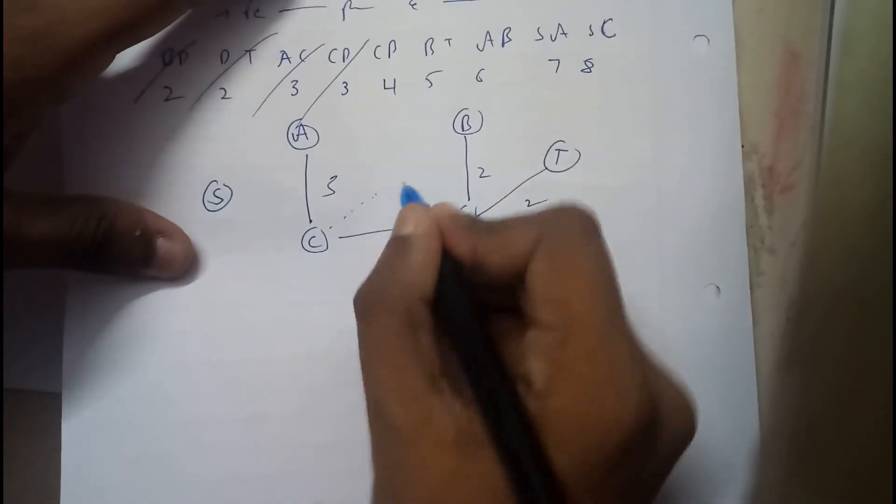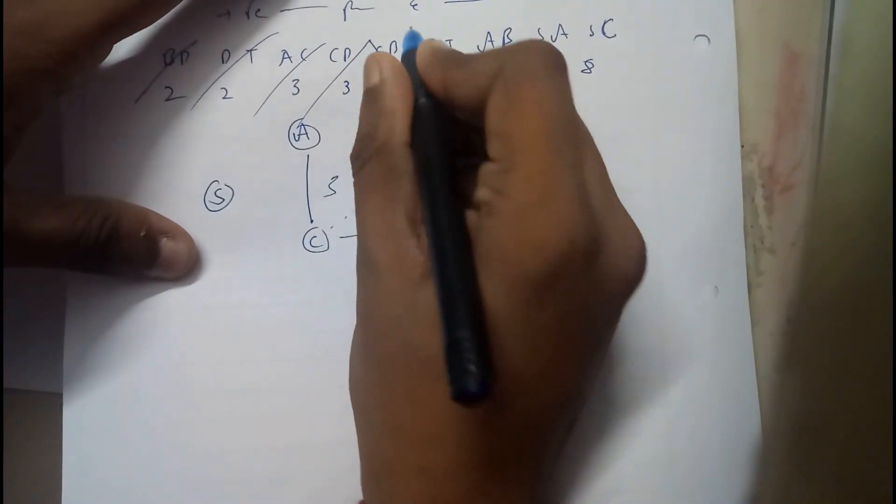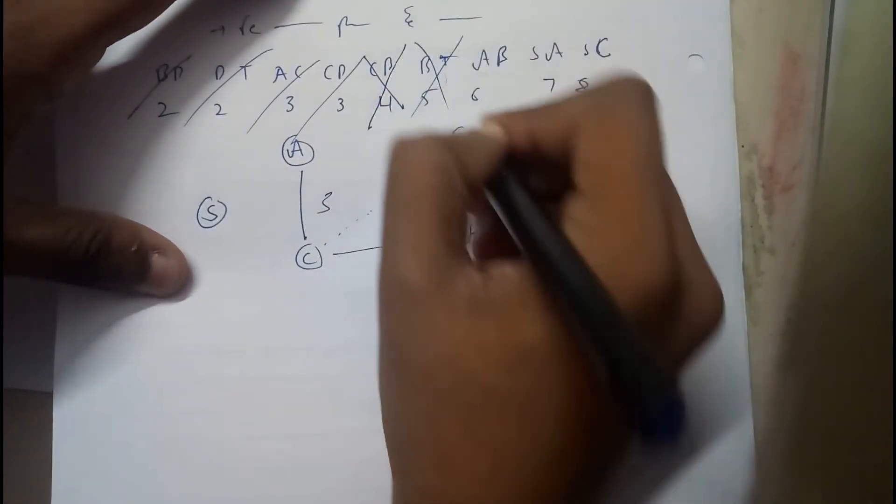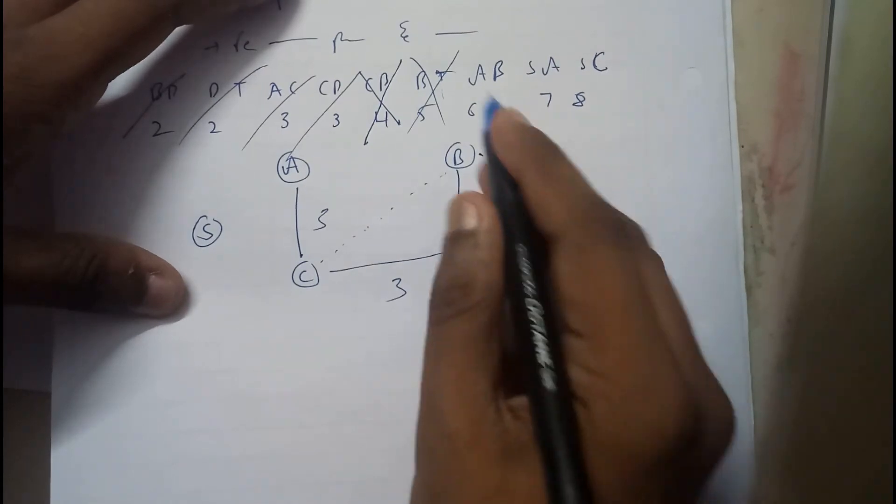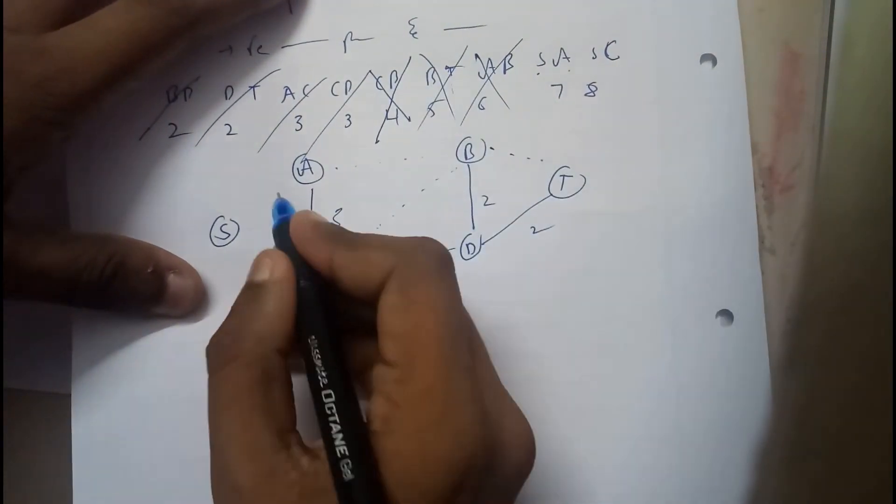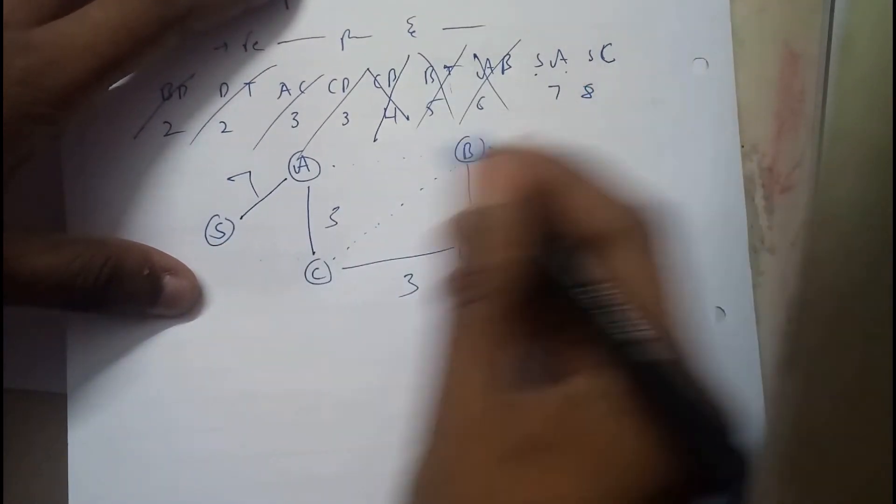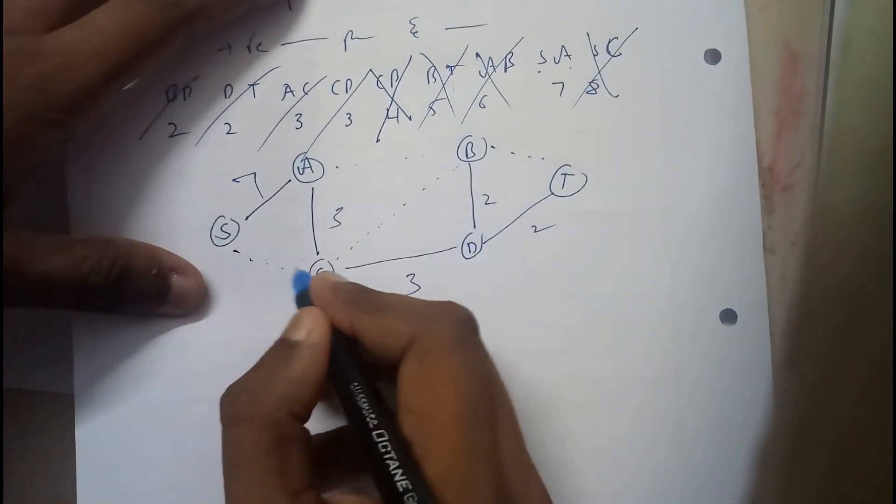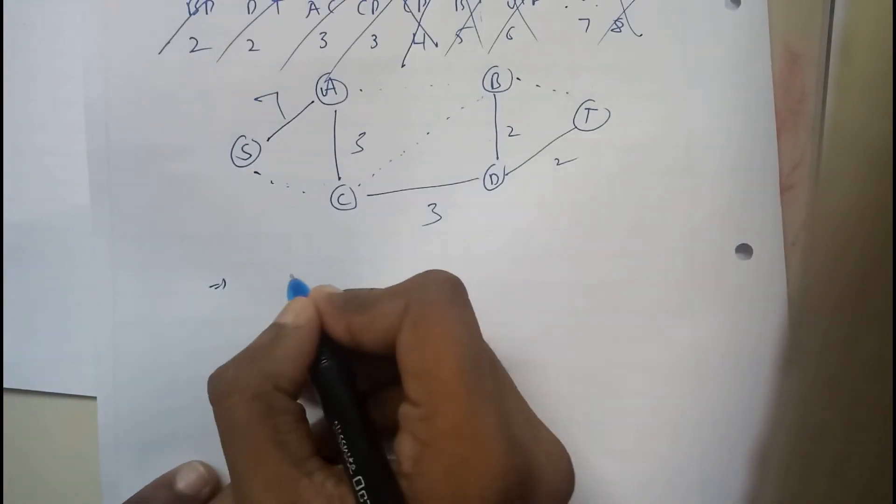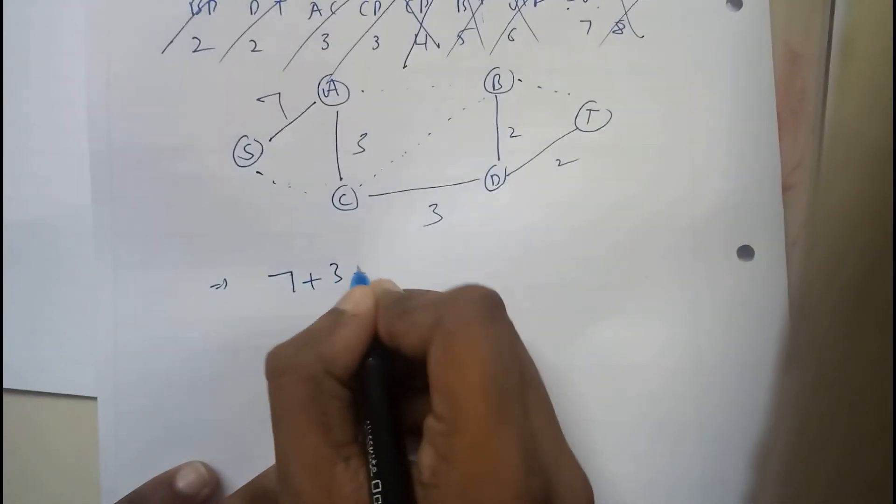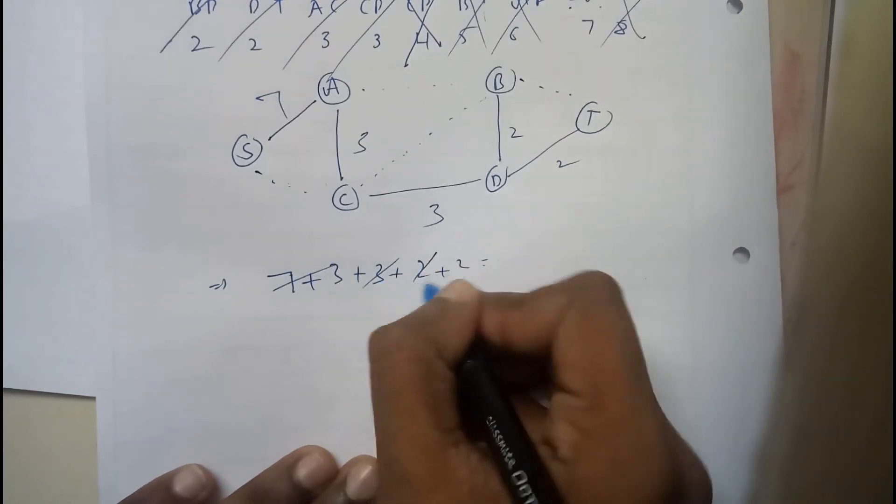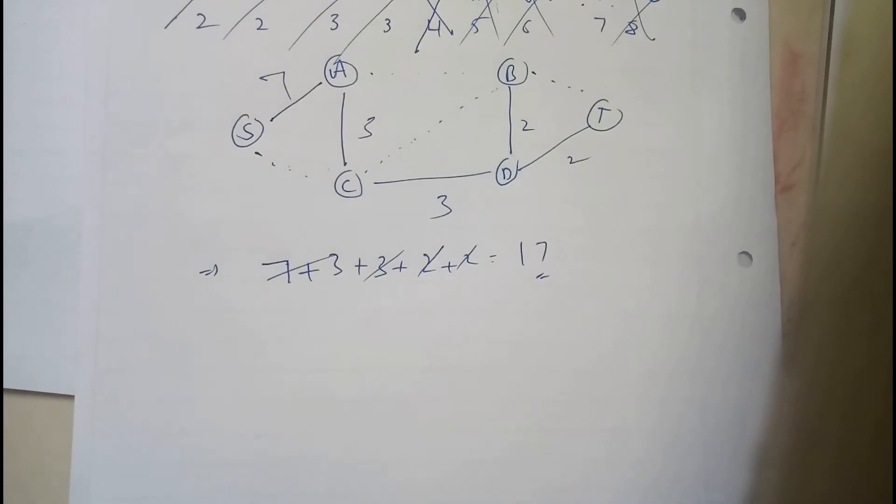CD, when I'll be trying to draw CD, it's going to be a closed loop, so I'll be avoiding it. BT, same situation. AB, same situation. SA, this is possible. SC, same situation. So this could be the minimum cost spanning tree for that. 7 plus 3 plus 3 plus 2 plus 2. 10, 30, 15, 17. 17 is the minimum cost of this spanning tree.